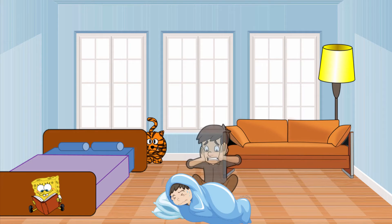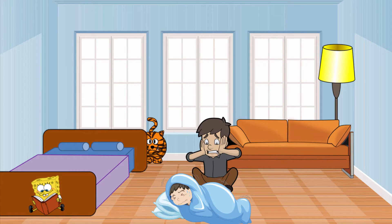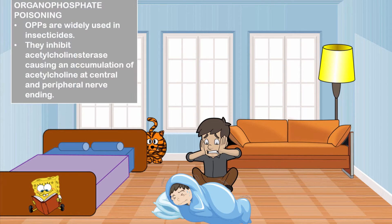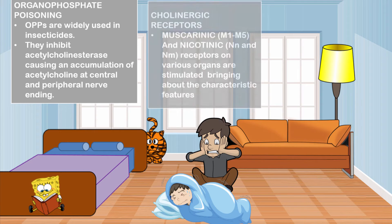Suppose you have a roommate, John, and one day you come back home and find that he is unconscious and you decide that he has organophosphate poisoning. Remember that organophosphates are used worldwide as insecticides, and they work in the human body by inhibiting acetylcholinesterase, an enzyme that breaks down acetylcholine, resulting in an accumulation of acetylcholine at both central as well as peripheral nerve endings.